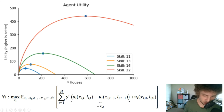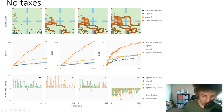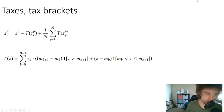The previous graph was done with no taxes — what they call the free market case. We see agent one just builds a lot of houses, and we do observe fundamental economic behaviors like division of labor emerging even without any tax structure.